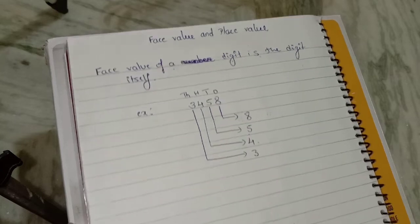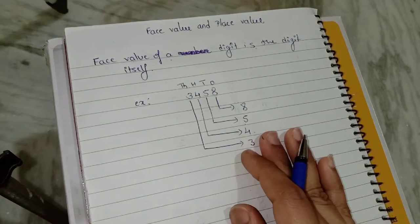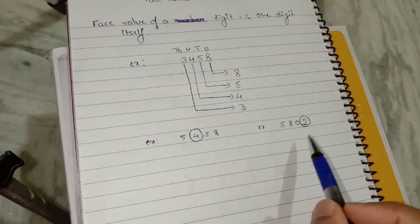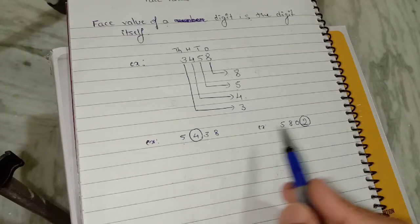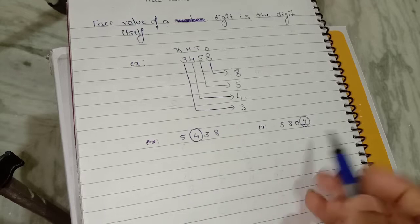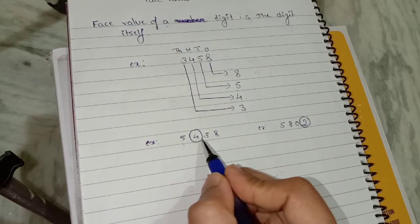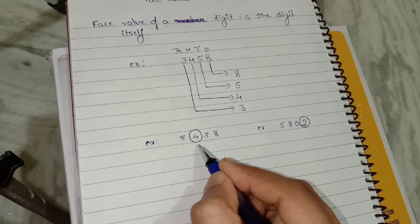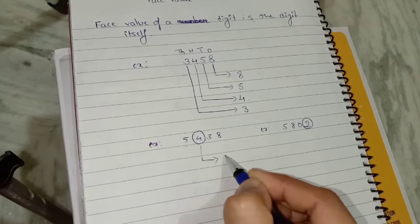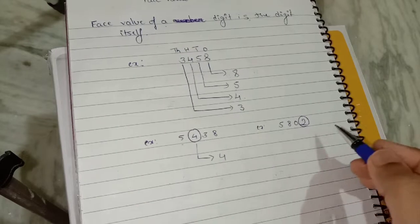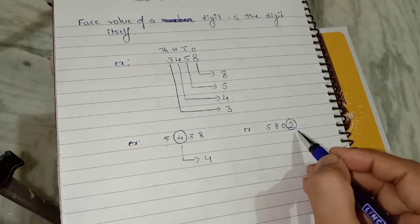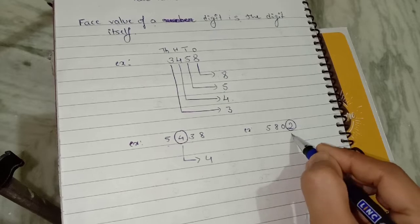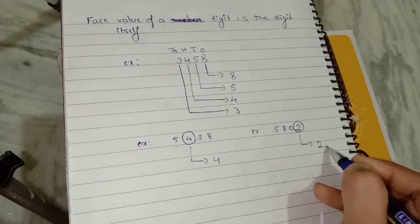We will take two more examples to understand face value. In this example, we will write the face value of only the circled digit. Here, the circled digit is 4, so the face value of digit 4 is 4. In the next example, what is the face value of digit 2? It is 2.